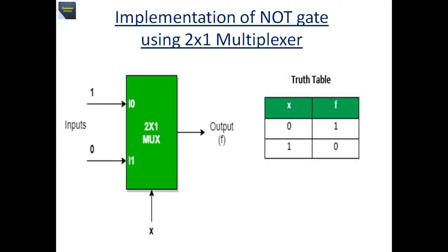A multiplexer can act as a universal combinational circuit — all standard logic gates can be implemented with a multiplexer. Here is the implementation of a NOT gate using a 2x1 multiplexer. i0 is always provided as input 1 and i1 is always provided as input 0. When x is 0 we get output 1, and when x is 1 we get output 0, which acts as a NOT gate.